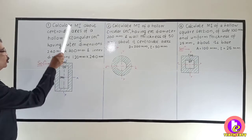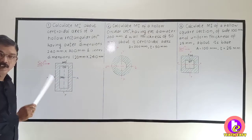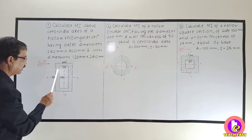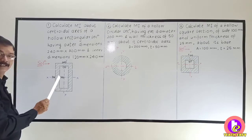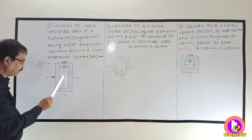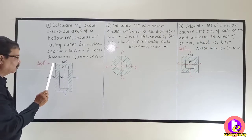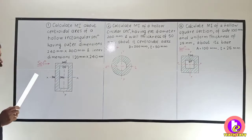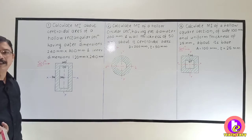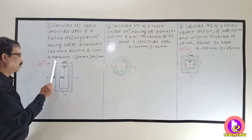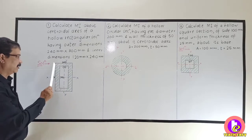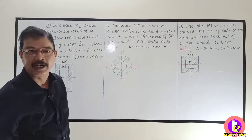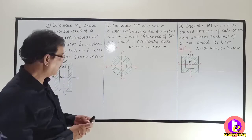Now keep in mind this hollow rectangular section is a symmetrical section because the two rectangles are concentric. So it is symmetrical about the XX and YY axis. For solving this, it will be very simple. From the outer rectangle, you will deduct the inner rectangle and you will get IXX and IYY.